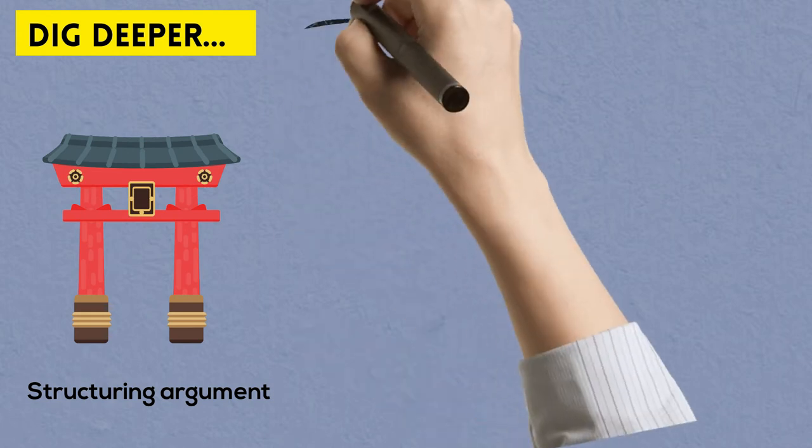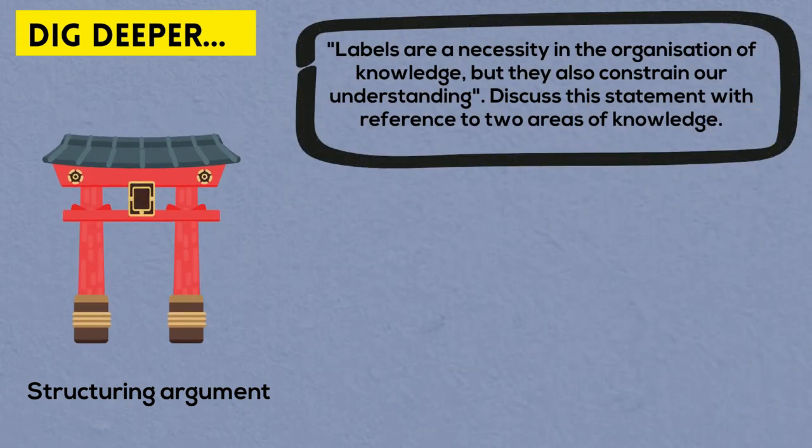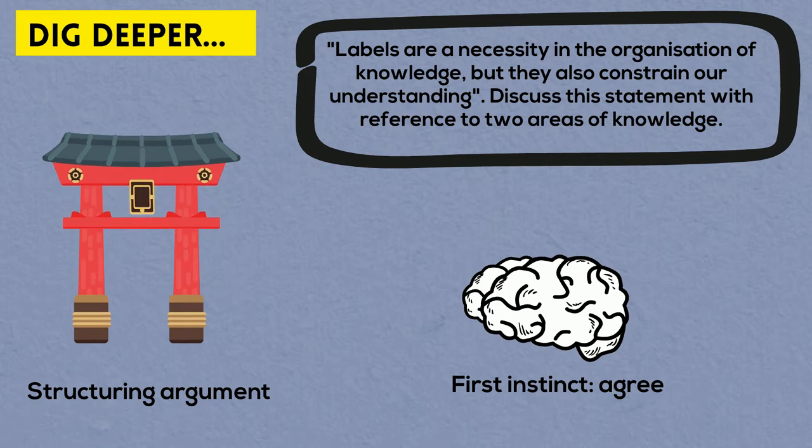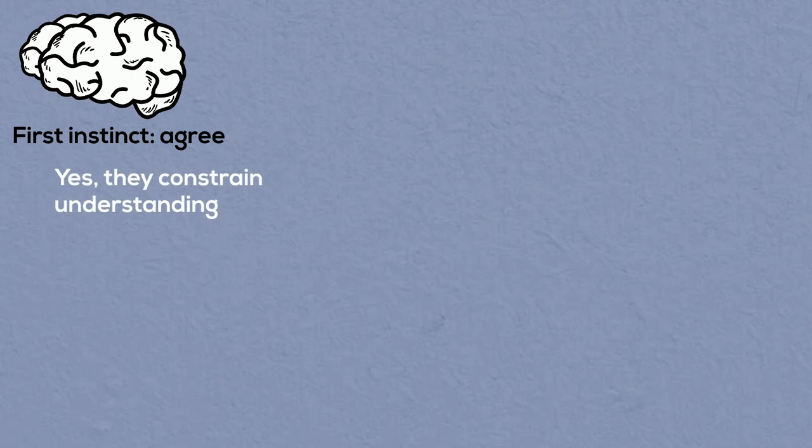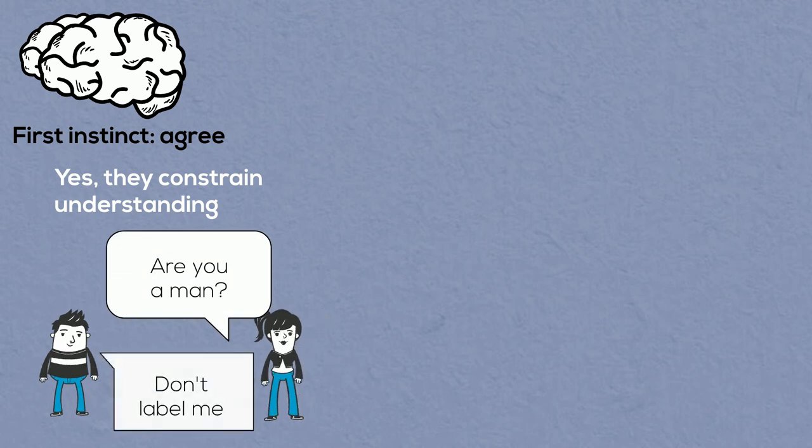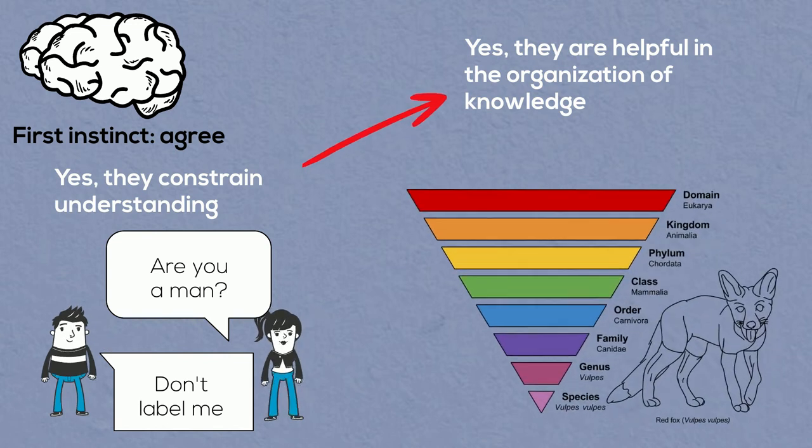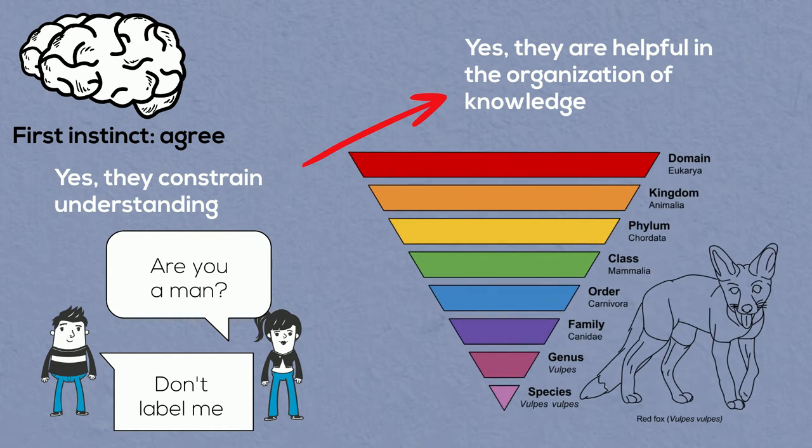The same reasoning applies to structuring your central argument. Let's read the title again: Labels are a necessity in the organization of knowledge, but they also constrain our understanding. The first thing that comes to your mind is probably to broadly speaking agree with the statement. It sounds sensible. Yes, obviously labels constrain our understanding by the very definition. In fact, even the connotations of our everyday use of the word label imply this idea, as in don't label me or I've been labeled. On the other hand, yes, obviously labels are helpful in the organization of knowledge. We use taxonomies and hierarchies such as biological species, schools of art, genres, historical periods, political regimes. Without them, our knowledge would be more chaotic and a lot more difficult to communicate.